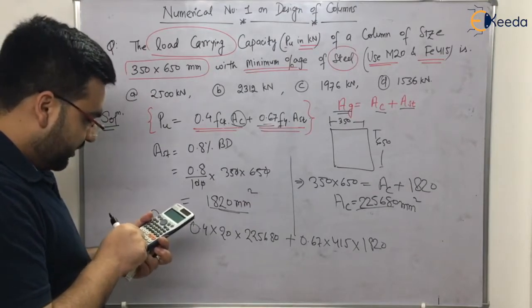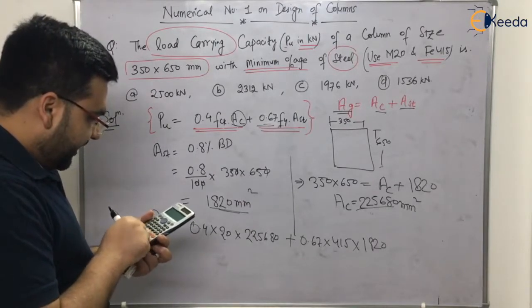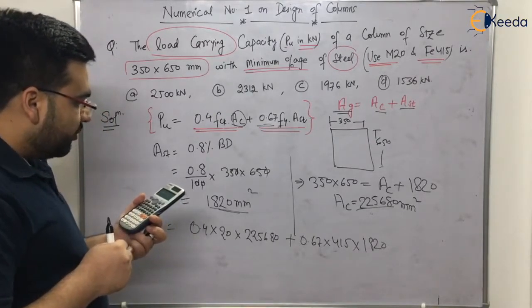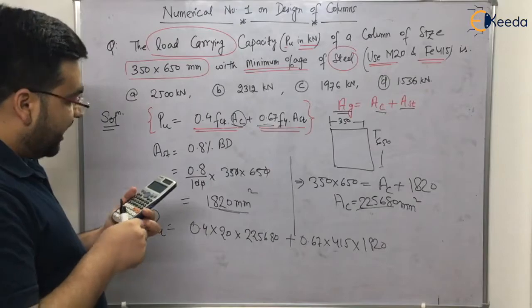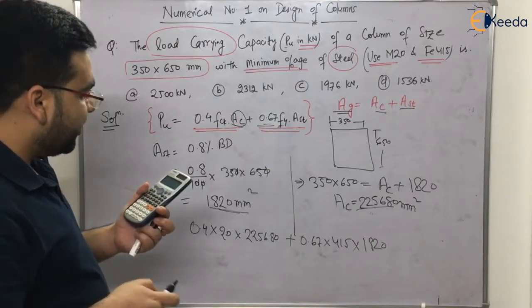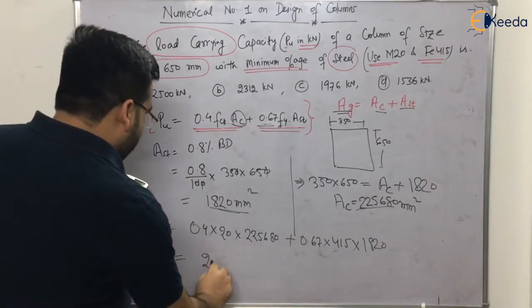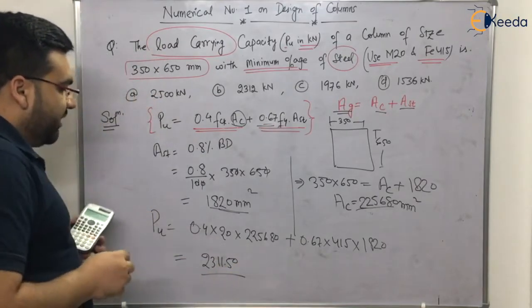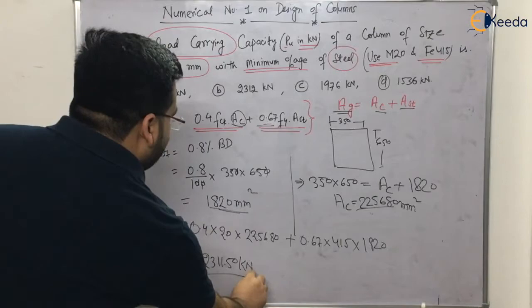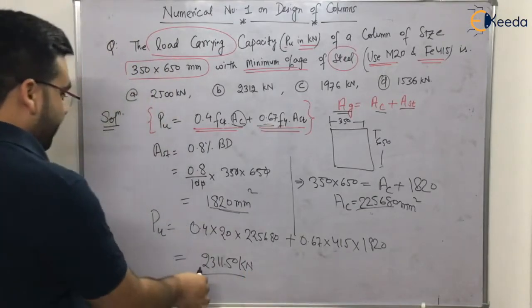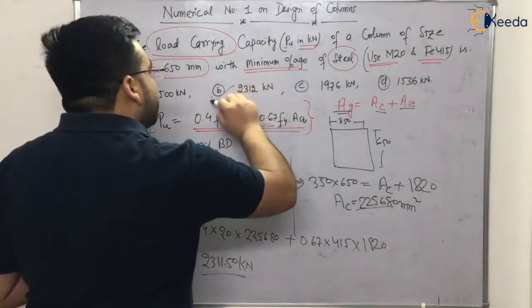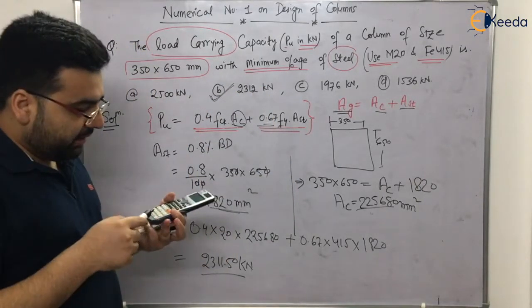into 415 into 1820. It comes out to be this much, and divided by 1000, it comes out to be 2311.50 kilonewton is the load carrying capacity. So 2311.50, this is the most appropriate answer, option number B.